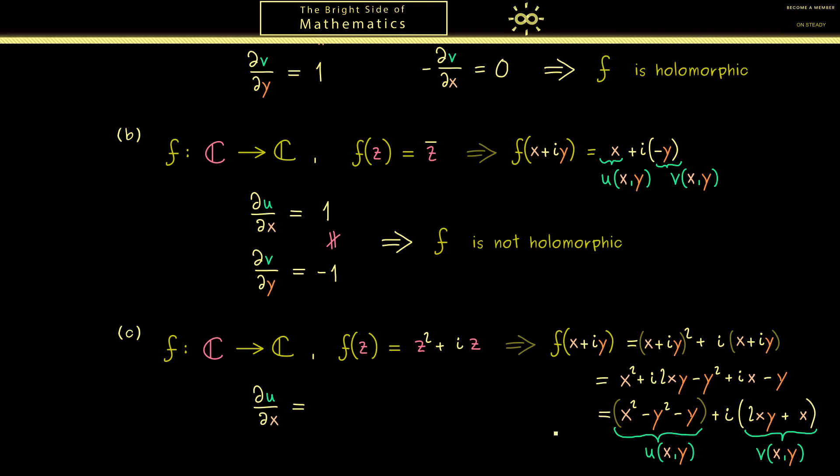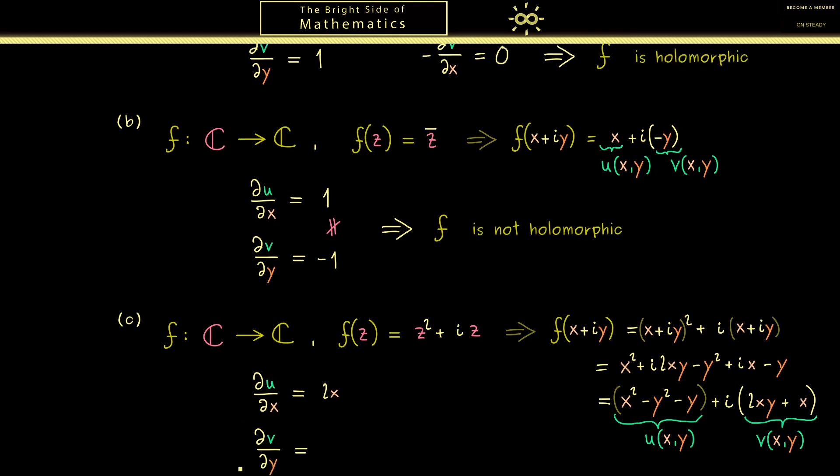First du/dx, not hard to see, it's simply 2x. Then the second partial derivative we want to calculate is dv/dy, which is also 2x. Hence our first equation is actually fulfilled.